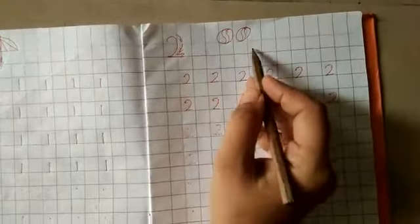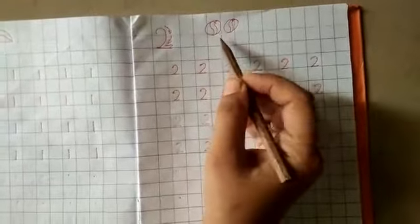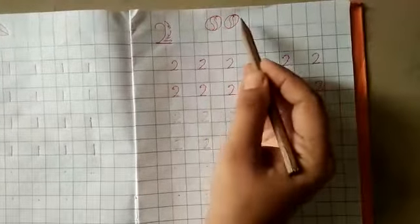How many balls? Two balls. One. Two. How many balls? Two balls. One. Two.